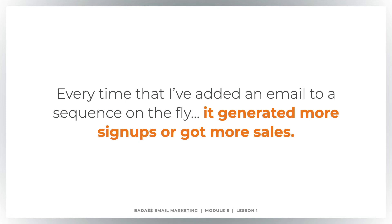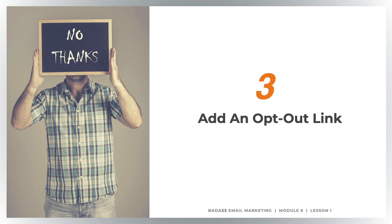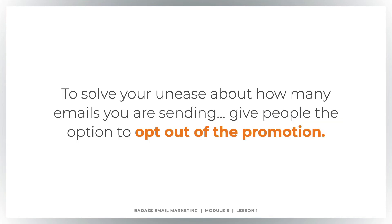I know that's going to make you uneasy, so let's talk about rule number three: add an opt-out link. To solve your unease about how many emails you're sending, give people the option to opt out of the promotion. This is also just good practice — you want to give people the option to say, 'I want to stay on your list, but I don't want to hear about this stuff anymore.' That way, you don't have to burn your list. If you don't give them this option, they may simply unsubscribe, when really all they want is to not hear about this promo right now.